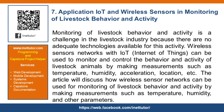Monitoring of livestock behavior and activity is a challenge in the livestock industry because there are no adequate technologies available for this activity. Wireless sensor networks with IoT, Internet of Things, can be used to monitor and control the behavior and activity of livestock animals by making measurements such as temperature, humidity, acceleration, location, and more. This article discusses how wireless sensor networks can be used for monitoring of livestock behavior and activity by making measurements such as temperature, humidity, and other parameters.